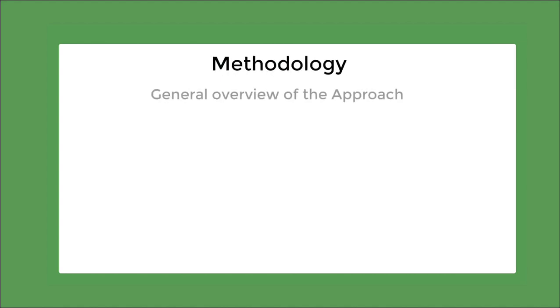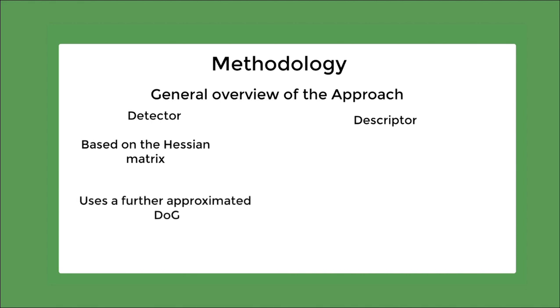So, let's go through the general overview of SURF. There are two parts, detector and descriptor. The detector is based on Hessian matrix and it uses a very basic approximation of DOG, difference of Gaussian. It also uses integral image, which was popularized by Viola-Jones algorithm and it's going to make the computation really fast.